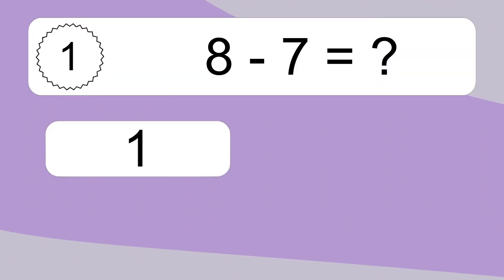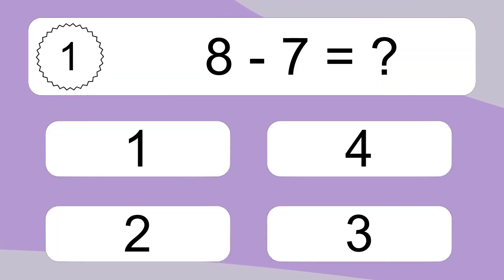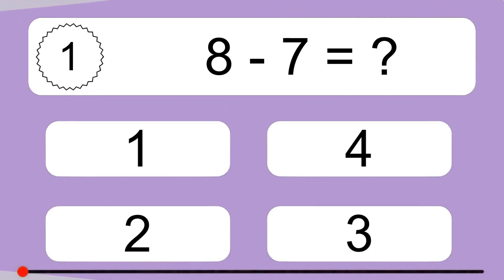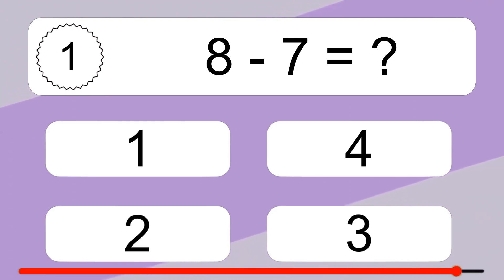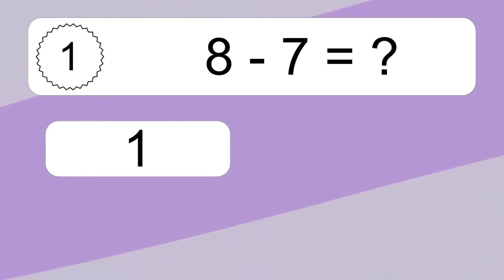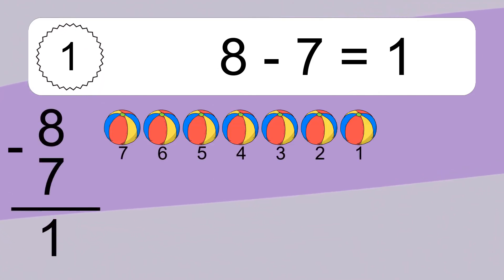8 minus 7 equals what? 8 minus 7 equals 1.